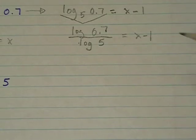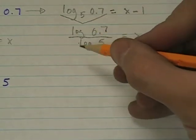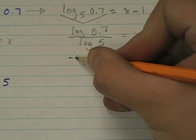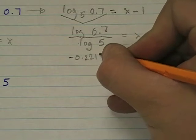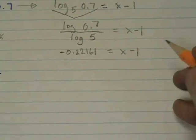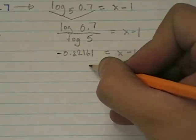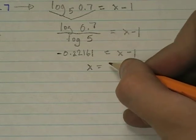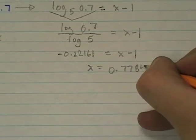And if you type this into your calculator, log of 0.7 divided by log of 5, you're going to get negative 0.22161 equals x minus 1. Now solve this for x, you add 1 to both sides, what do you get? You get x equals 0.7784.